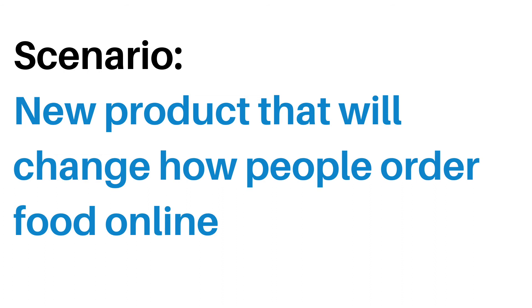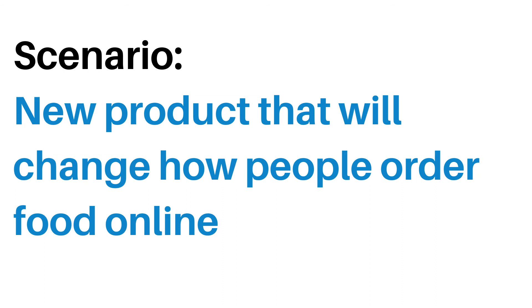Scenario number two: a product team building a new product into the market trying to differentiate themselves as a company. Here is the aggregate profile of every team member on this product team for their natural inclinations. They are building a product trying to disrupt the market. You probably don't have a problem of them getting it done or building it well — they're really focused on ensuring that it looks good. But you might get a product that doesn't necessarily solve the problem of being innovative; that's not where their heads are at. What would you need to do to balance this team so you get the outcomes that you need?